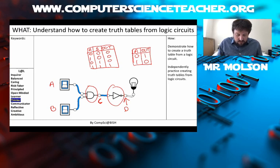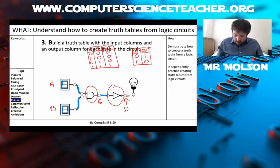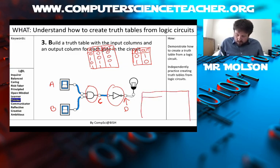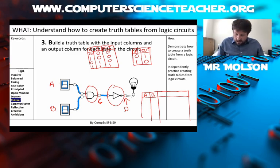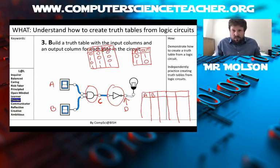Now it says to build the truth table with the input columns and an output column for each gate in the circuit. So we need a column for input A, a column for input B, and then two more columns for our two outputs. So we've built our truth table — that's B in our mnemonic.